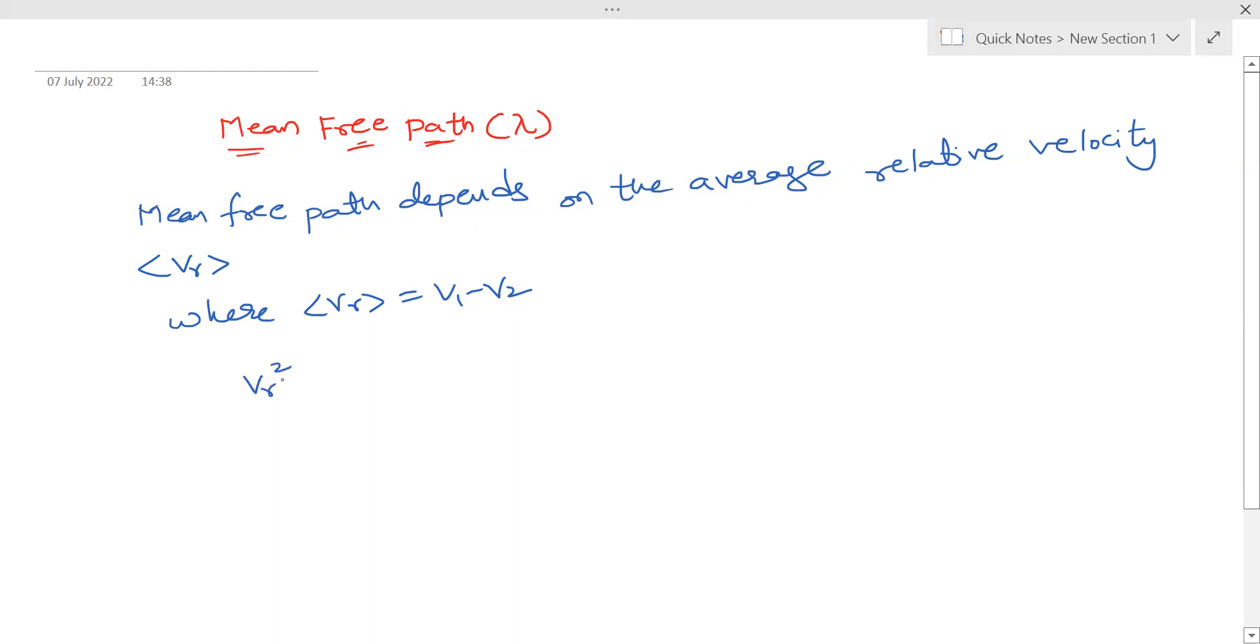So for relative velocity, when we square vr squared, it will be v1 squared plus v2 squared minus two v1 dot v2, which is in vector calculus. For the average value or expected value, this value will be zero. The expected value of cos theta is zero, so the dot product of these two is zero.